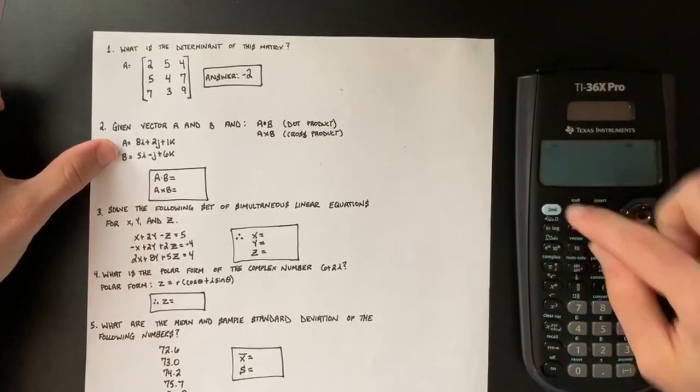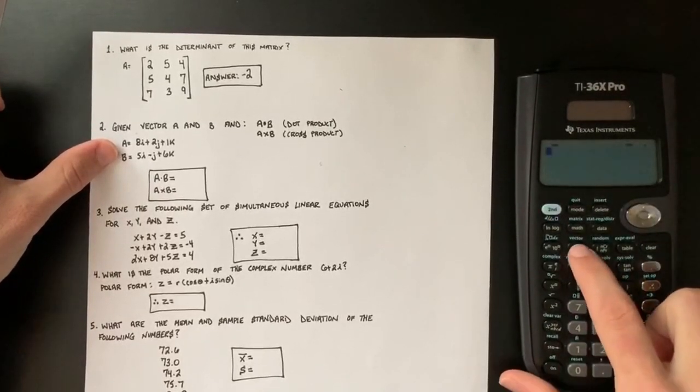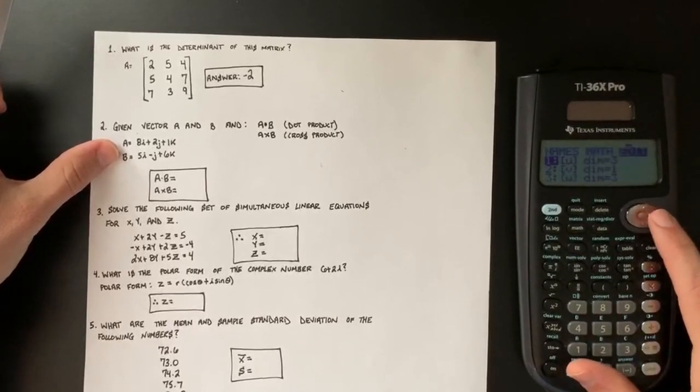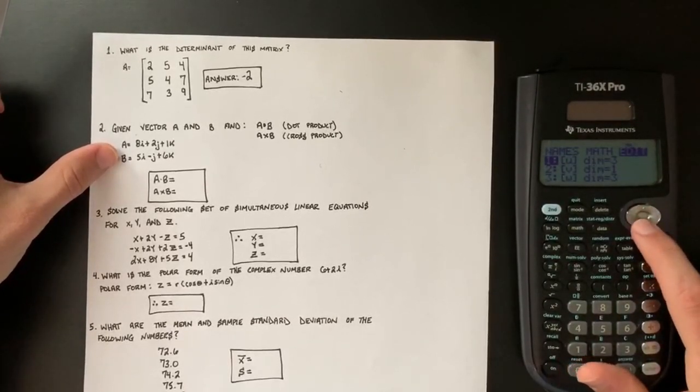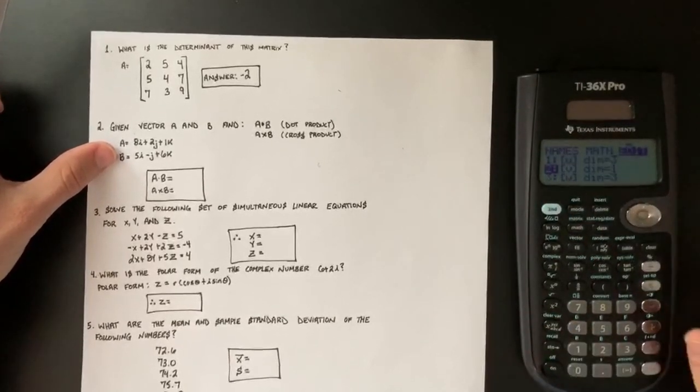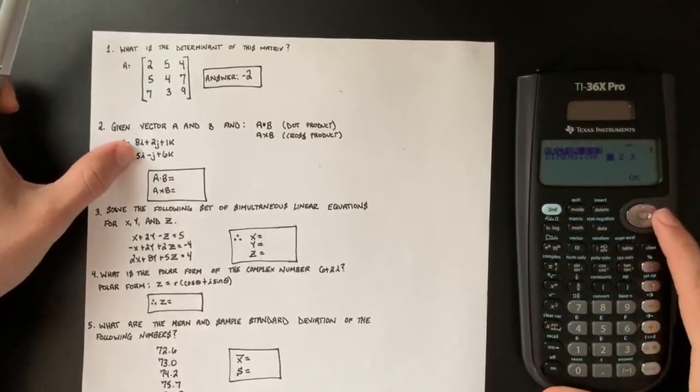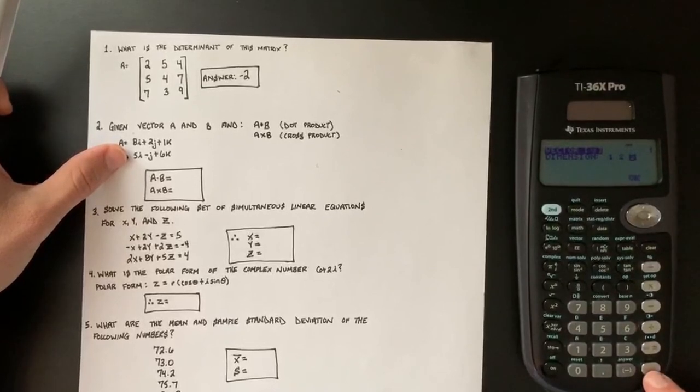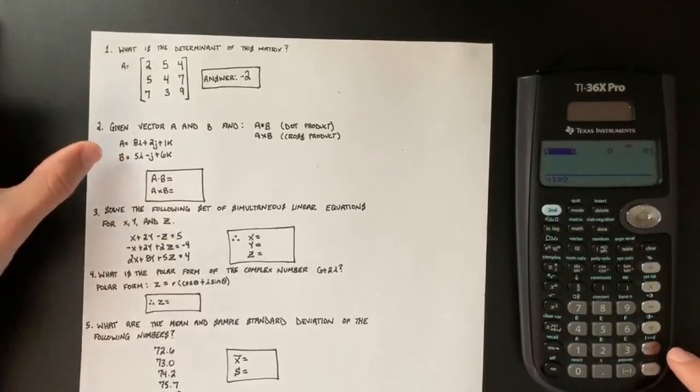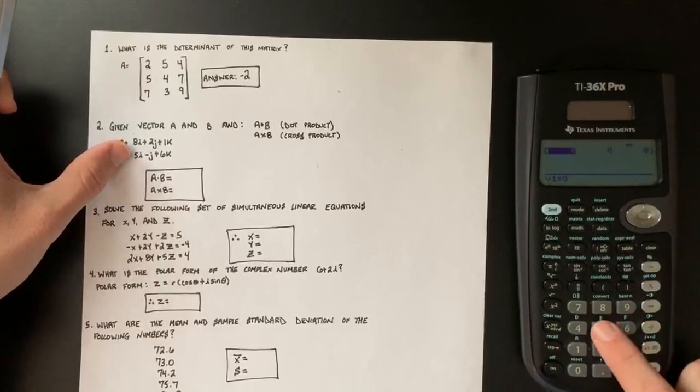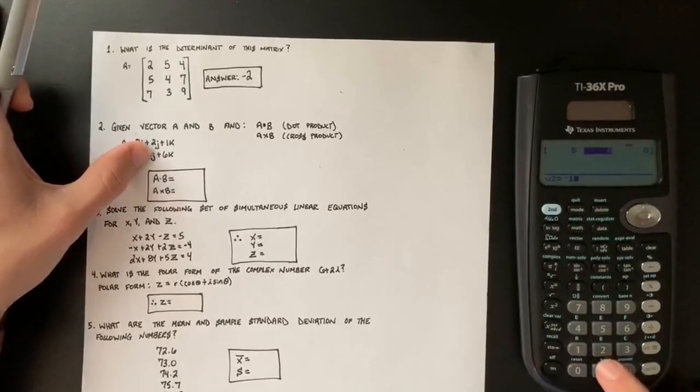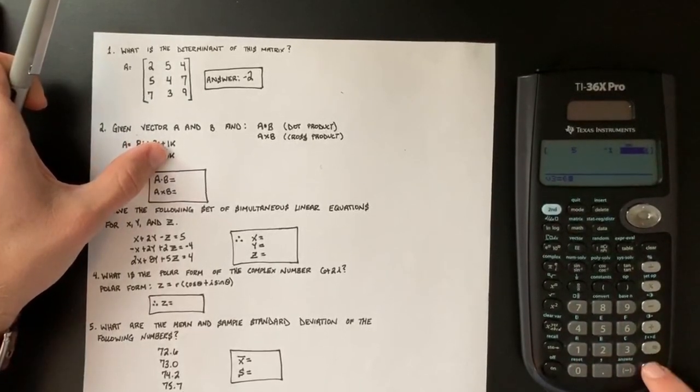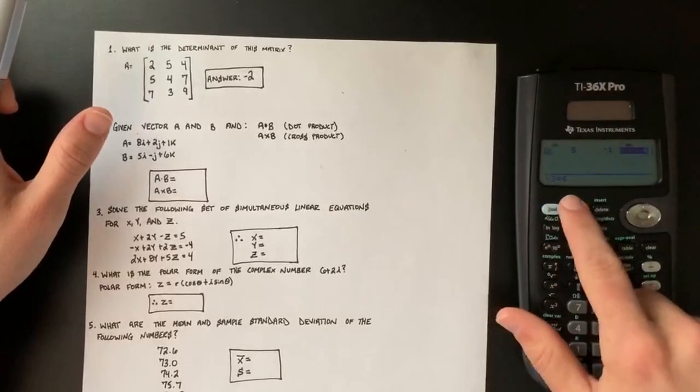And now you go back to the same screen that we were just at. So second vector and you scroll over and now you want to make a second vector. So you go down to the V number two and hit enter. This is also a three variable vector. So you go over to the right and hit enter on the three, hit enter again. And now you input the coefficients again, which are five, negative one, and six. So now you hit second quit again.